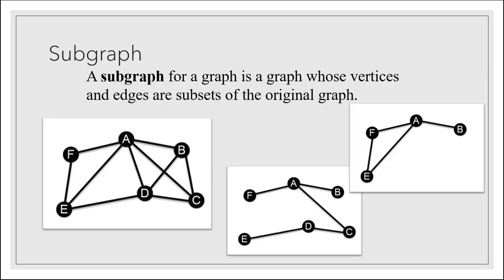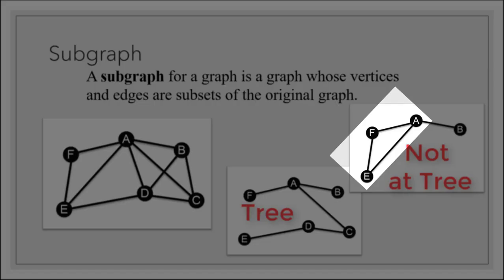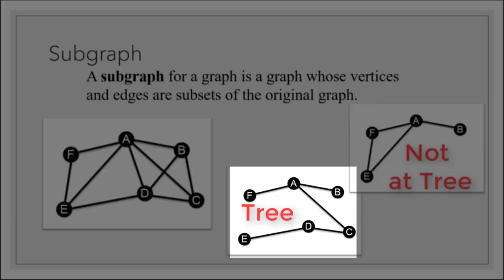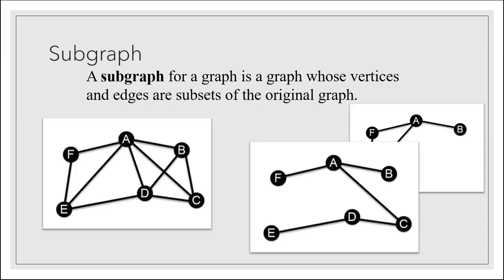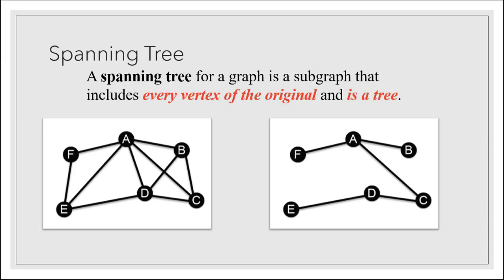Here's another example of a subgraph for that same graph. Notice that this second subgraph has the characteristics of a tree, whereas the first one didn't. In the first graph we had a circuit, but in this subgraph we don't. Also, this second subgraph includes all of the vertices from the original graph. Since this is a tree that includes all the vertices of the original graph, we call this a spanning tree. A spanning tree for a graph is a subgraph that includes every vertex of the original and is also a tree.